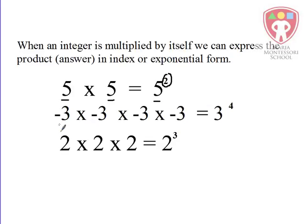Here we have another integer, negative 3, multiplied by itself 4 times. And instead of writing the answer as 81, we can write it in indexed form, which is 3 to the power of 4. This is the indexed or exponential form.